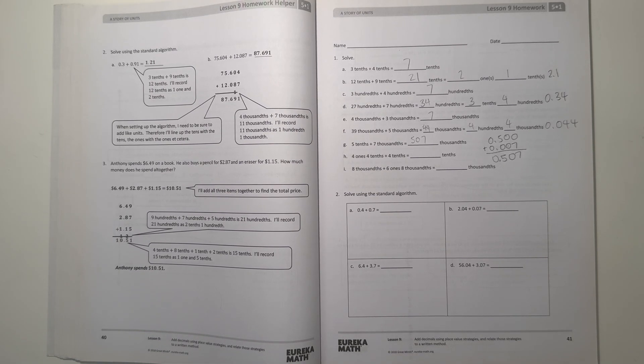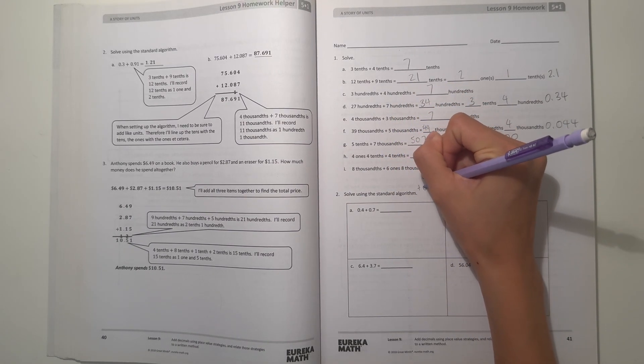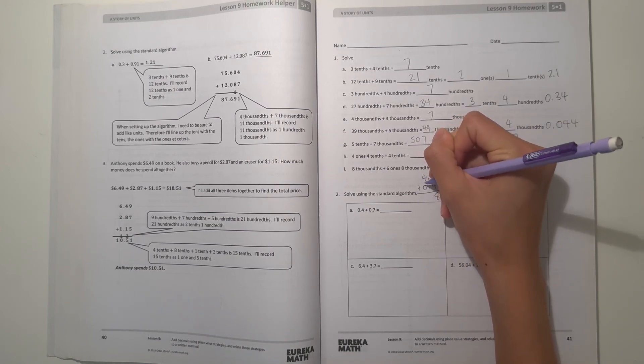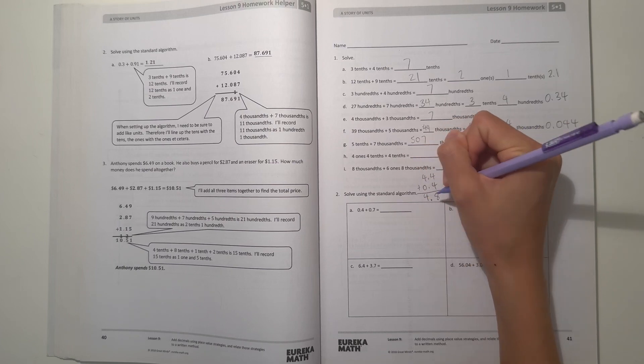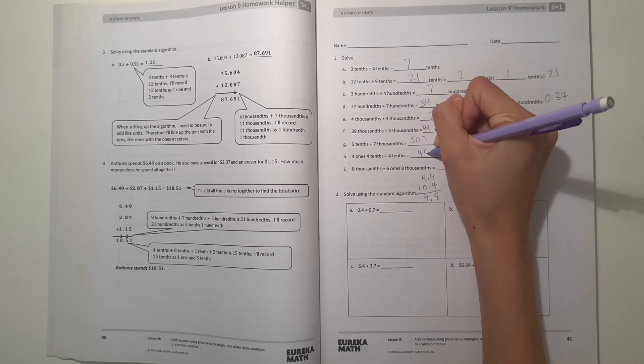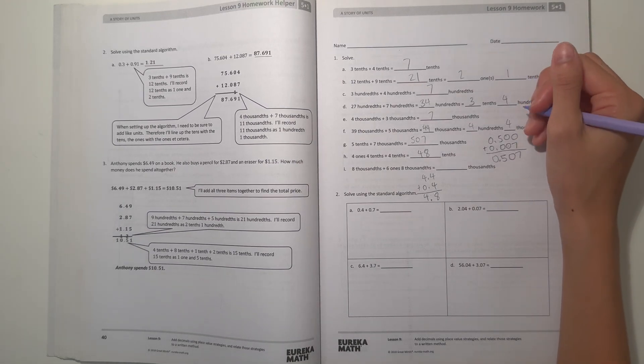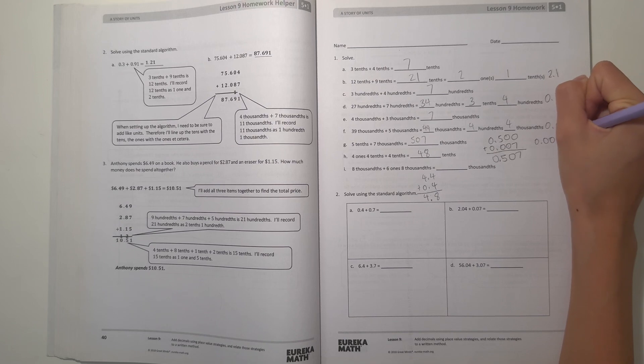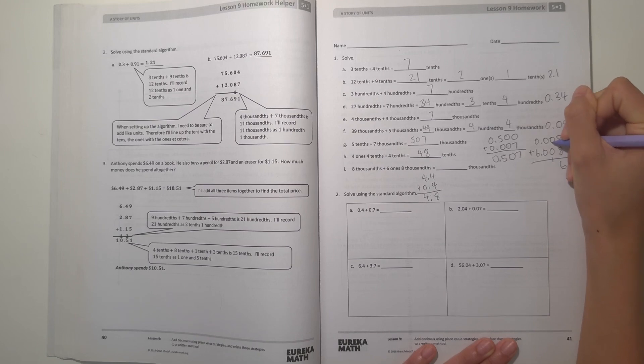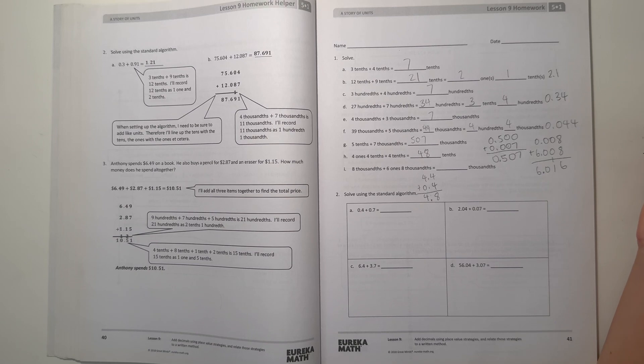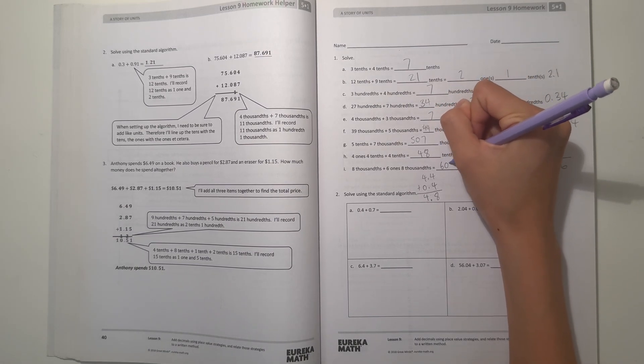In H, 4 ones, 4 tenths plus 4 tenths. So 4 ones, 4 tenths is 4.4 plus 0.4. So that would be 8 and then 4. And if you move the decimal point down, we have 4.8, which is 48 tenths. Alright, in I, we have 8 thousandths. So that's 0.008 plus 6 ones. That's 6 and 8 thousandths, 0.008. So 8 plus 8 is 16, 0 plus 1 is 1, 0 plus 0 is 0. And 6 would be here. And move the decimal point down. We have 6.016, which is the same as 6 ones, 16 thousandths.